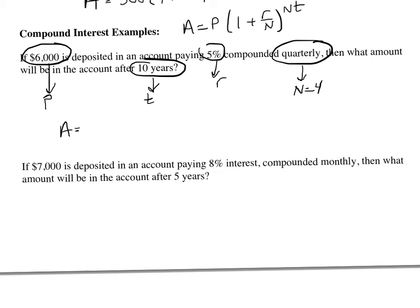So A will equal 6,000 times (1 plus 0.05 over 4) to the N, which is 4, times 10 power. So that is 6,000 times 1.0125 to the 40th power, because 0.05 divided by 4 is 0.0125, and 4 times 10 is 40.